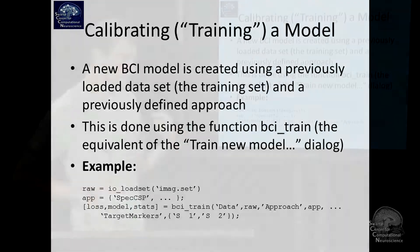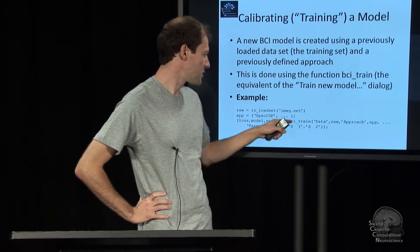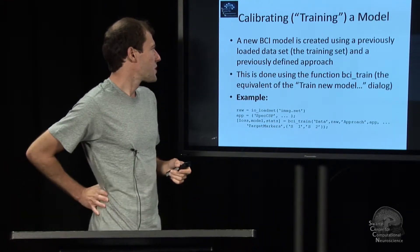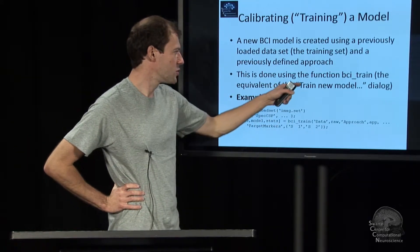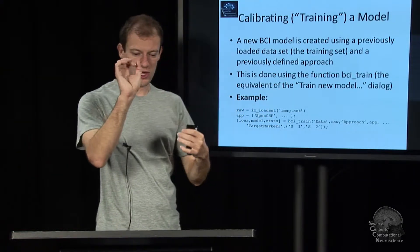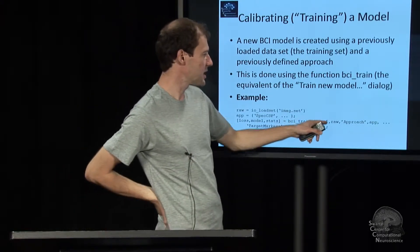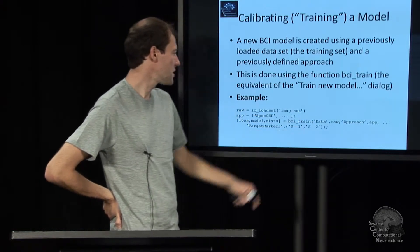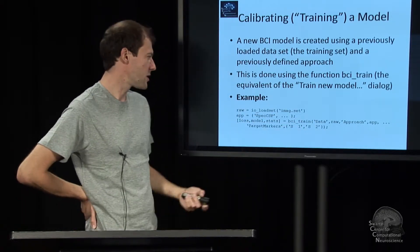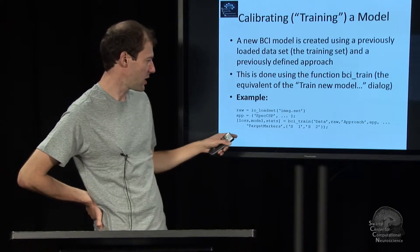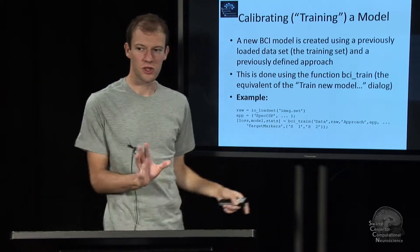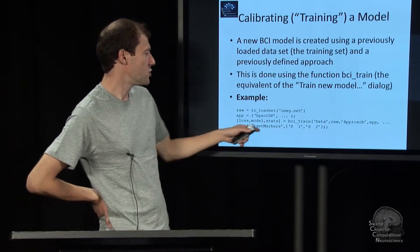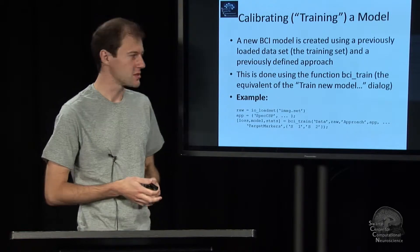And now you want to train your model and the function for that is the bci_train function. So that is equivalent to the user interface dialog that you get when you click train your model. It takes your data, it takes your approach. Its name value pairs here, as you see. And you can go on and overwrite more stuff. And what you probably always want to overwrite is this target marker specification. That's documented in bci_train how that works, to explain to the toolbox which markers are important and to what labels they map.